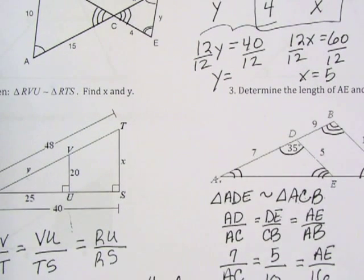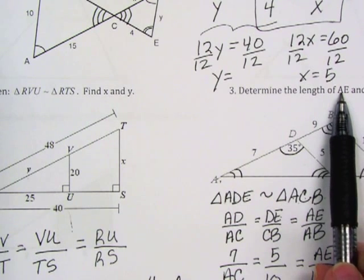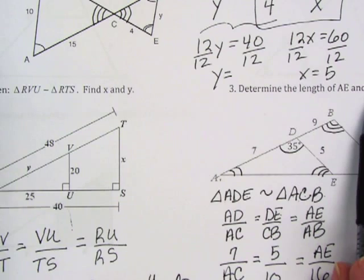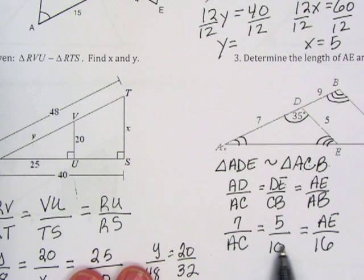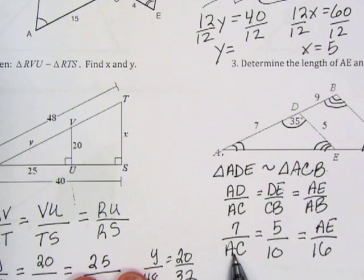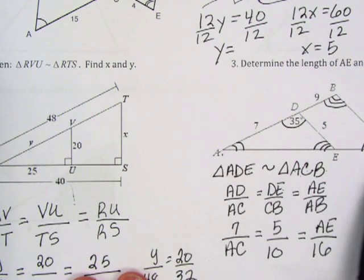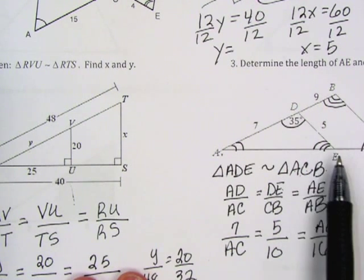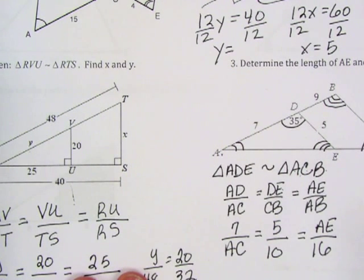Now if I look up here, it says determine the length of AE. Okay, that's right there. And then it says EC, and I don't see EC in my ratios. But if I determine the length AC and I determine the length AE, I will be able to subtract to get EC.